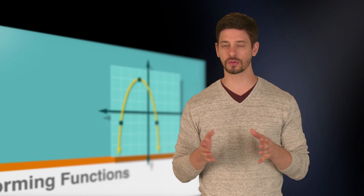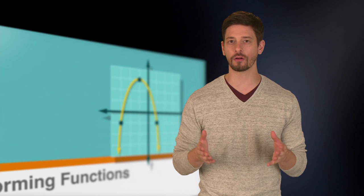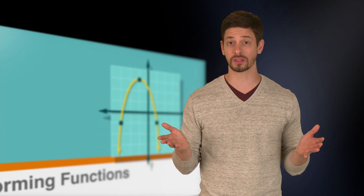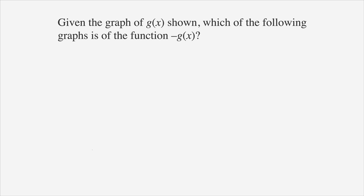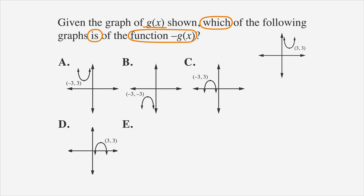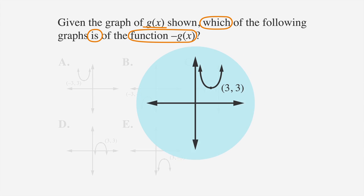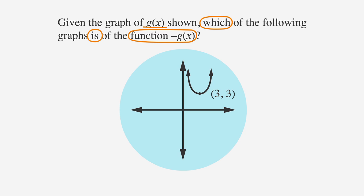So how do these rules help us with ACT questions that involve transforming functions? Let's try one. Given the graph of g shown, which of the following graphs is of the function negative g of x? From our review of transforming functions, remember that multiplying the whole function by negative 1 makes every y value negative and has the effect of flipping the function over the x-axis. Notice that since the vertex of the parabola is 3 coordinate points away from the x-axis, the vertex of the new reflected parabola will also be a distance of 3 coordinate points below the x-axis.